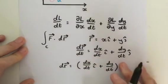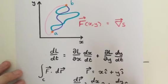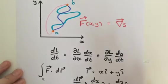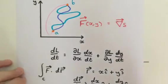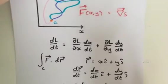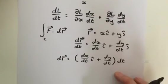So we've got dr. Now, let's look at our vector field again, F. It's the gradient of a scalar field S. So let's take a closer look at what we're dealing with here.